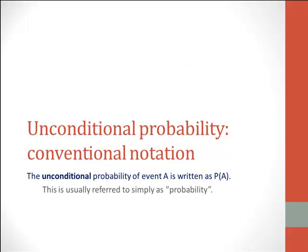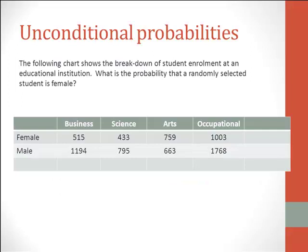The unconditional probability of event A is written as P of A — P within parenthesis A. This is what you have been seeing already as simply probability; that's how it is usually referred to. To understand the concept of unconditional probabilities in a two-way classification chart, let us look at the following example.